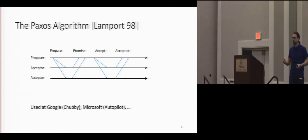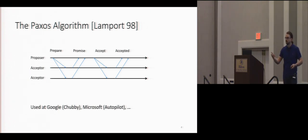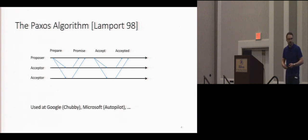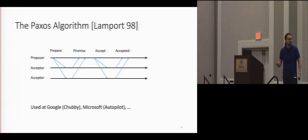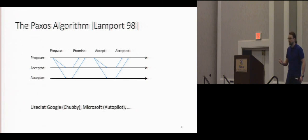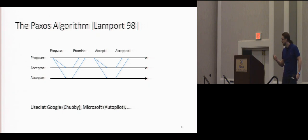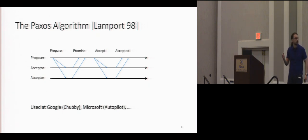When enough machines — typically a strict majority — confirm that they received the request, only then can everybody process the request. This type of algorithm is used in resource management in data centers, for instance Google and Microsoft, in replicated databases, network file systems. For instance, we had the talk by Brian about the Iron Fleet system that internally used the Paxos algorithm.